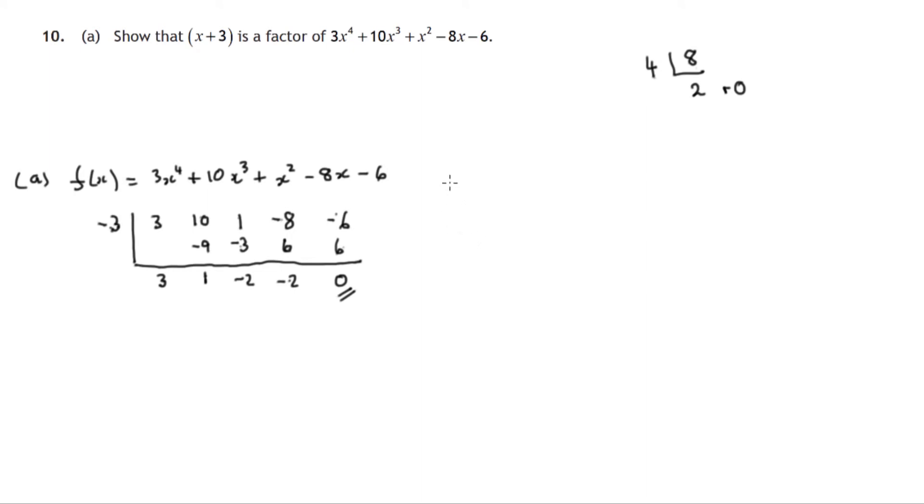Now we'd have to explain what's going on. Since when f of x is divided by x plus 3 the remainder is 0, then that means x plus 3 is a factor of f of x.